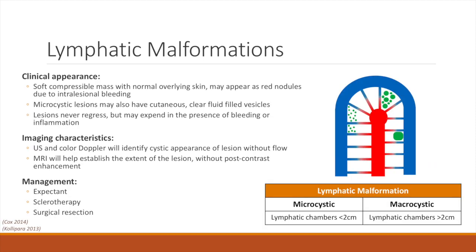Lymphatic malformations are a vascular malformation composed of abnormal lymphatic channels. These lesions are congenital, but may not become clinically apparent until later in life. Lymphatic malformations can be further divided based on the size of the lymphatic chambers. Microcystic lymphatic malformations are composed of lymphatic chambers less than 2 cm, whereas macrocystic lymphatic malformations are composed of lymphatic chambers greater than 2 cm. Clinically, these lesions typically appear as a soft, compressible mass with usually normal overlying skin, although there can be variability in the appearance. If there has been interlesional bleeding, the mass may have red discoloration. Microcystic lesions may also have cutaneous vesicles that are filled with a clear fluid and can weep.